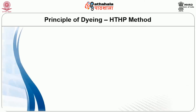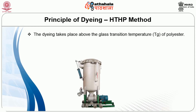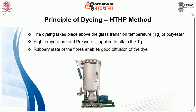Moving on to the principle of dyeing by high temperature and high pressure method: here the principle is different from carrier dyeing. Instead of carriers to swell the fibres, in HTHP the polyester fibre is taken towards its glass transition temperature. Glass transition temperature is a temperature at which the fibre acts in a rubbery state — it is a second-order transition where intermolecular fibre movement occurs. At this temperature, dyeing takes place and the dye molecule from the dye bath transfers to the fibre, where it gets entrapped due to the rubbery state. High temperature and high pressure are applied to obtain the glass transition temperature.